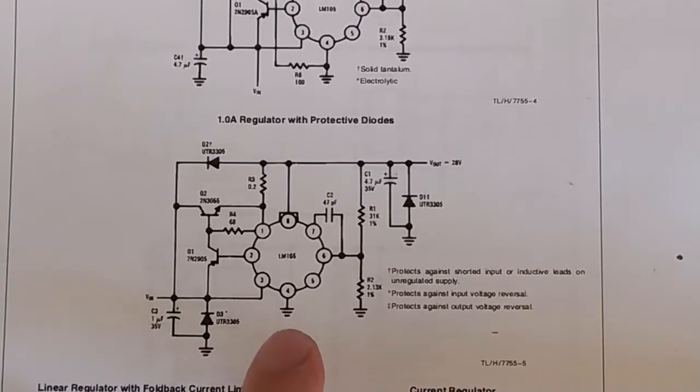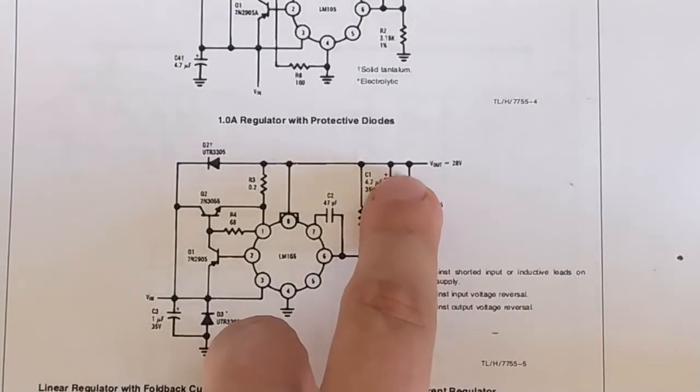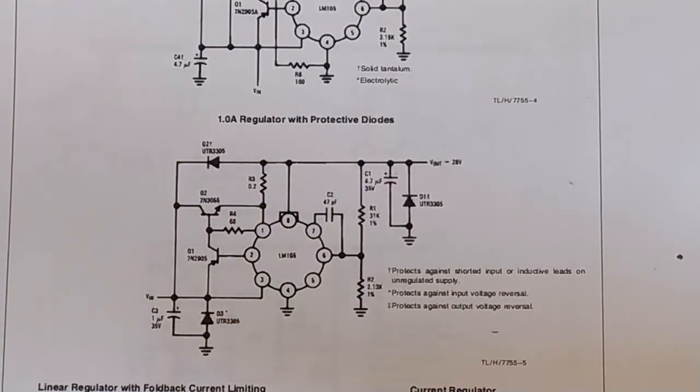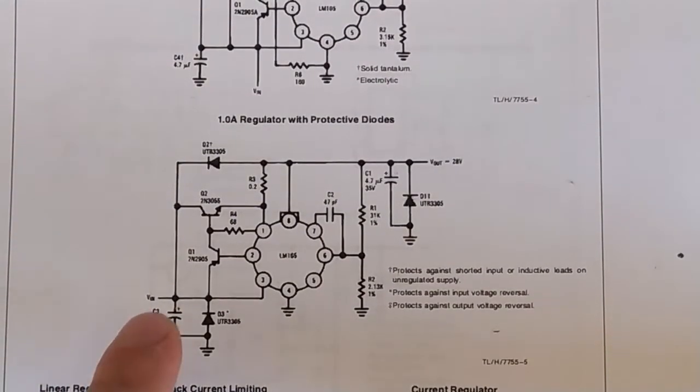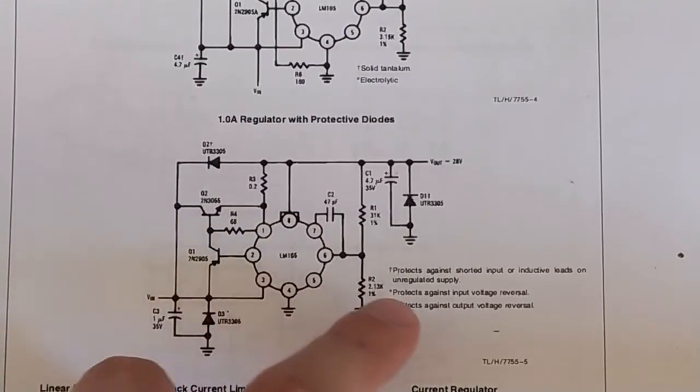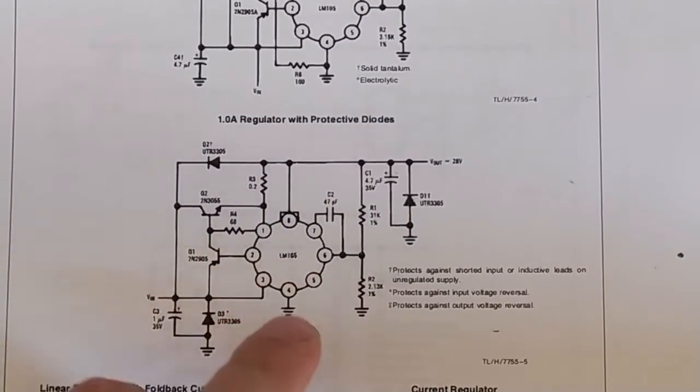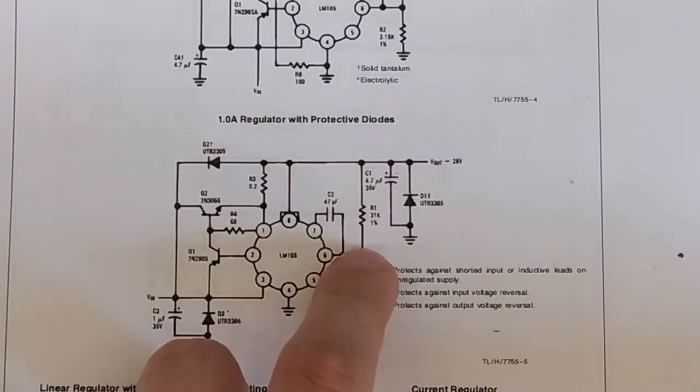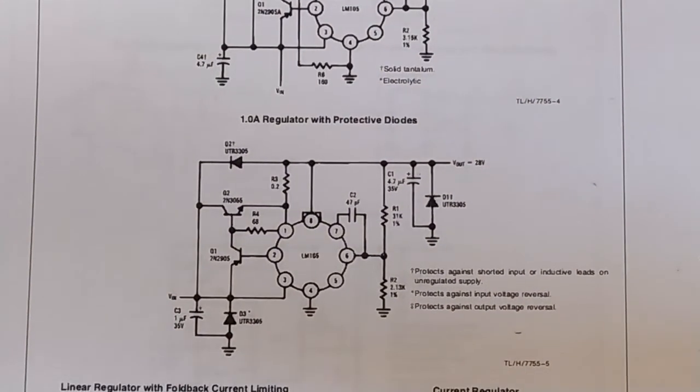But what we're going to look at today is this middle one here which is the 1 amp regulator with protective diodes. As you can see there's some fairly basic stuff: input voltage, regulation capacitor also on the output filter cap, and then we have the IC here in the middle.